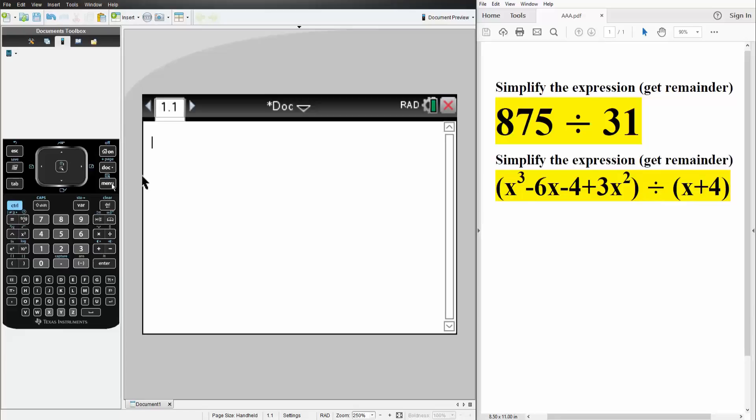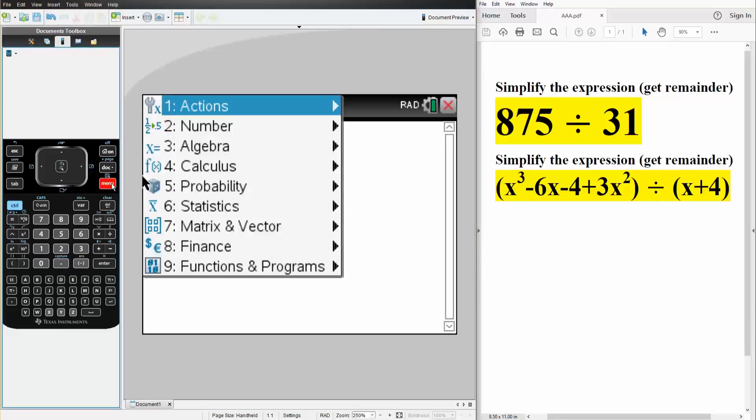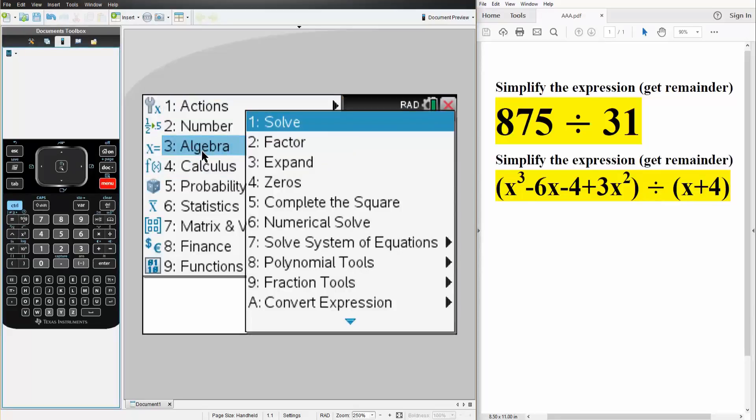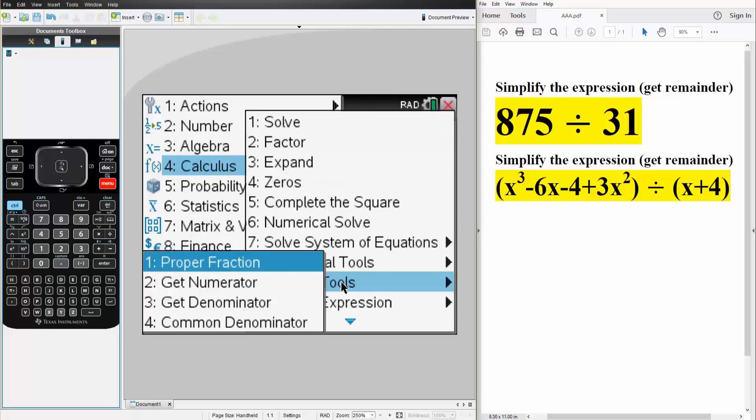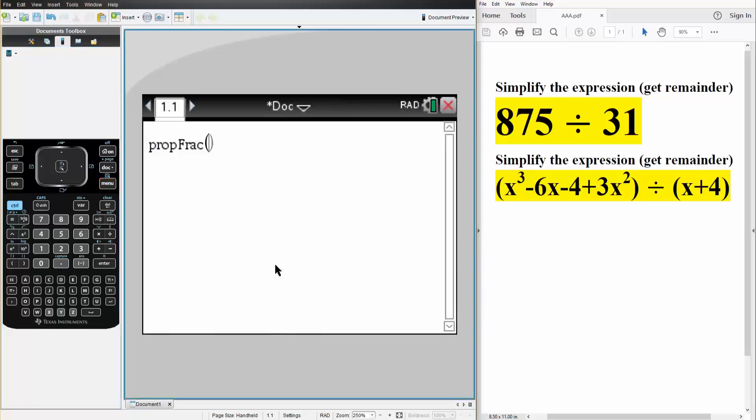So the first thing we're going to do is hit menu and we will go to algebra and we will go to fraction tools and we will hit proper fraction. So we want to do 875 control division divided by 31 and we hit enter and the answer would be 28 plus 7 over 31. The remainder was 7.